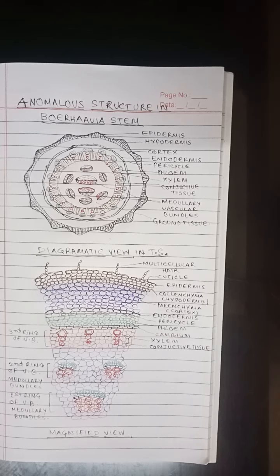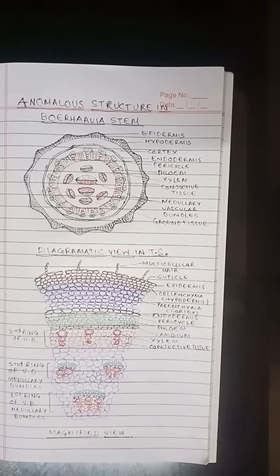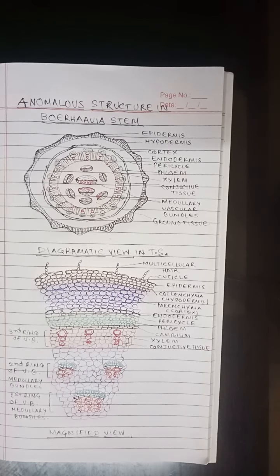The innermost ring consists of only two fairly large bundles facing each other, situated in the pith. Hence they are called medullary bundles. Each bundle is conjoint, collateral, open, and endodermal. These two vascular bundles lie opposite each other and are the largest of the bundles. Xylem in both bundles is towards the center of the stem and phloem towards the periphery. The bundles are oval in shape.